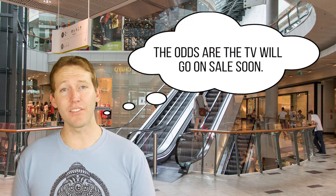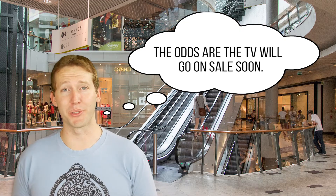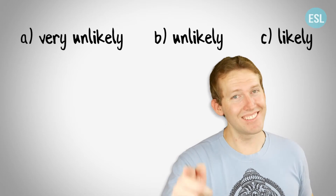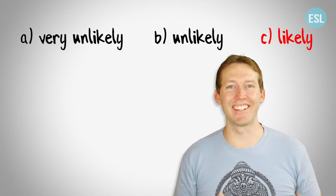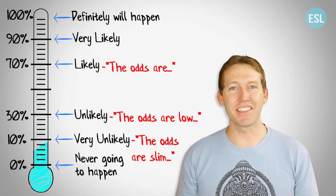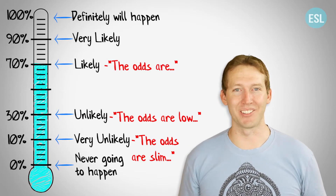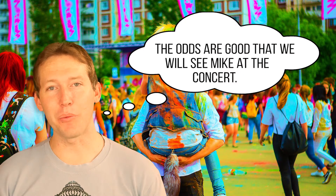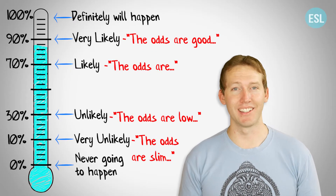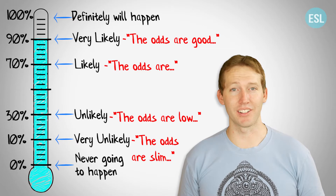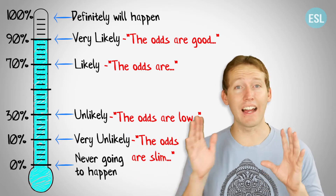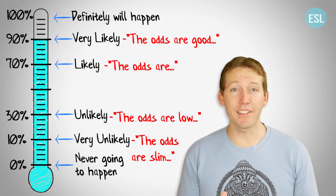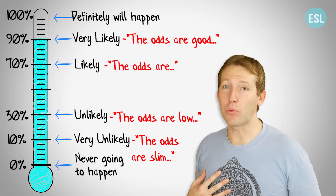The odds are the TV will go on sale soon, meaning it is likely that the TV will go on sale soon. And the last one: the odds are good that we will see Mike at the concert. In other words, it is very likely to see Mike at the concert. It's not guaranteed, it's not definite. But if you were to bet on it, I would bet on it.